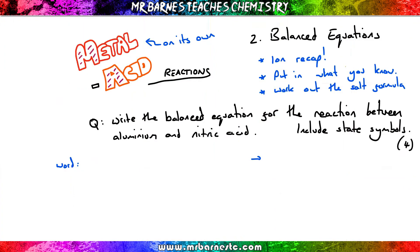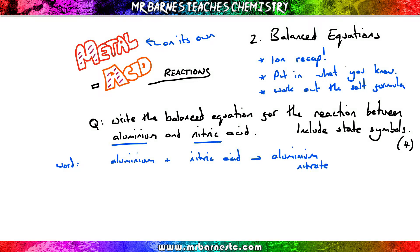Let's have a look at another one. I'm reacting aluminium with nitric acid. So the word equation: we start with aluminium and nitric acid. What am I going to produce? Nitric acid makes a nitrate, so it's aluminium nitrate. It's a metal on its own, so hydrogen.